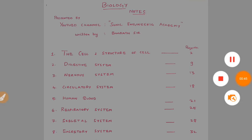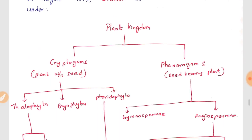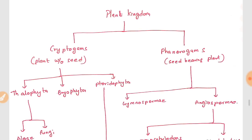Classification of plants: the study of different types of trees and plants is called botany. The father of botany is Theophrastus. In the year 1883, each layer classified the botanical world into some parts. Today we are going to see the plant kingdom classification.